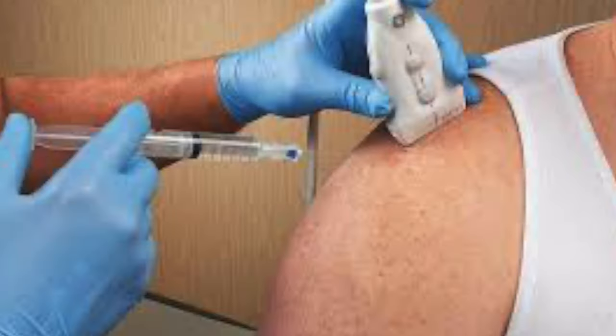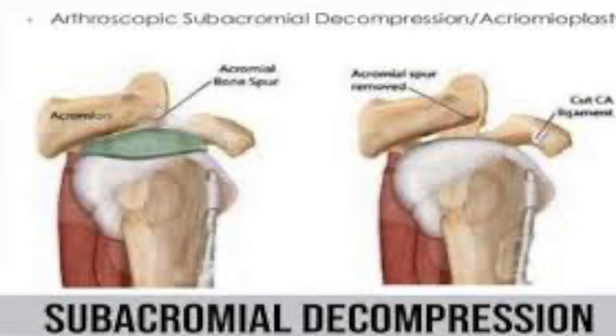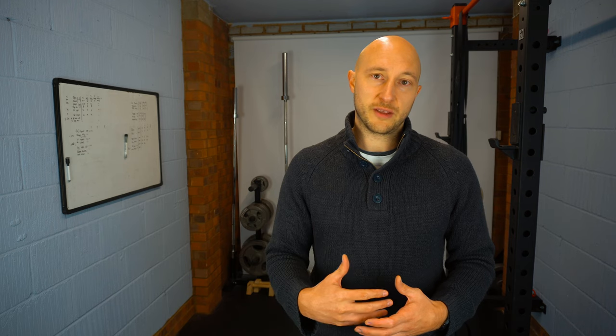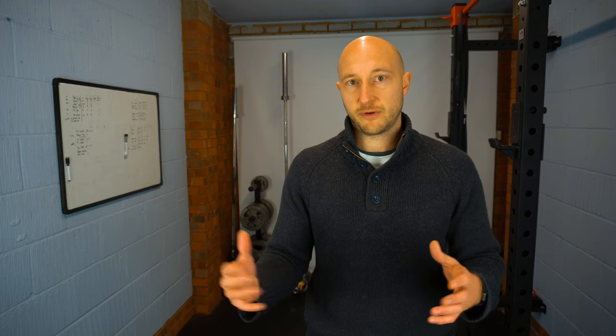If pain is limiting a patient's ability to exercise or significantly affecting their function, a corticosteroid injection (CSI) is often used — it allows more movement, less pain, and enables them to get on with their rehab. In certain patients who don't improve over long periods of time, subacromial decompression surgery is sometimes performed, but this should not be the first port of call. We know that exercises and surgery have a very similar effect, so surgery is reserved for those who haven't improved with conservative treatment.